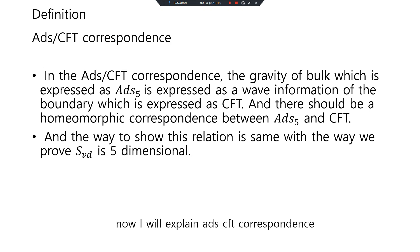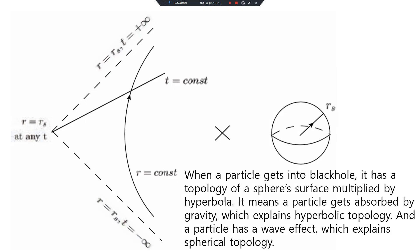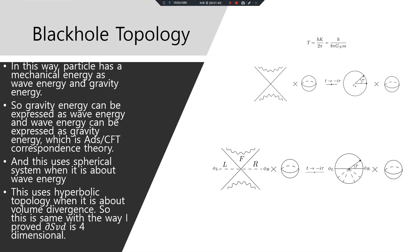The way to show this relation is the same as the way we prove SVD's five-dimension. When a particle gets into a black hole, it has a topology of a sphere surface multiplied by hyperbola. A particle gets absorbed by gravity, which explains hyperbolic topology, and a particle has a wave effect which explains spherical topology.